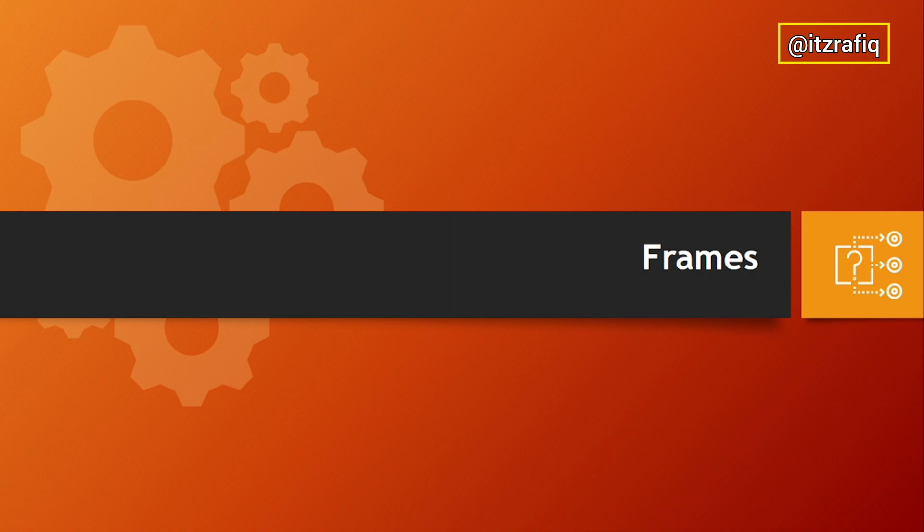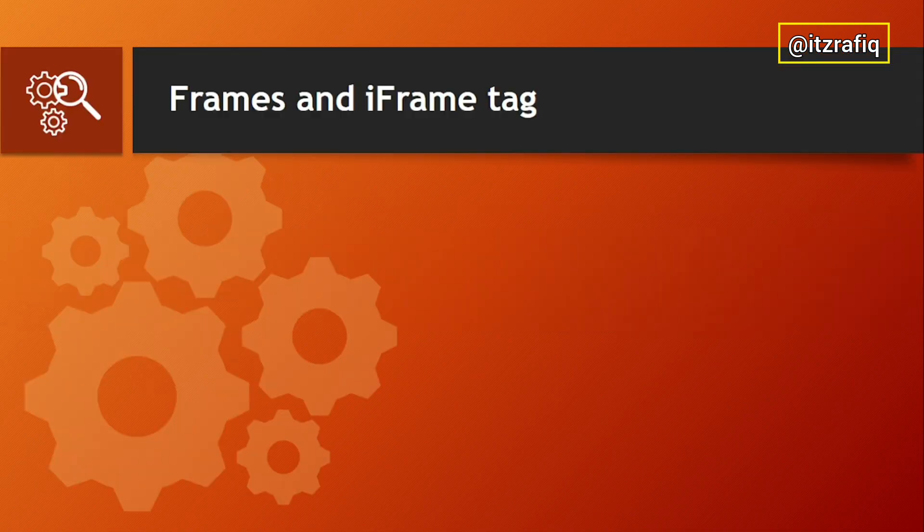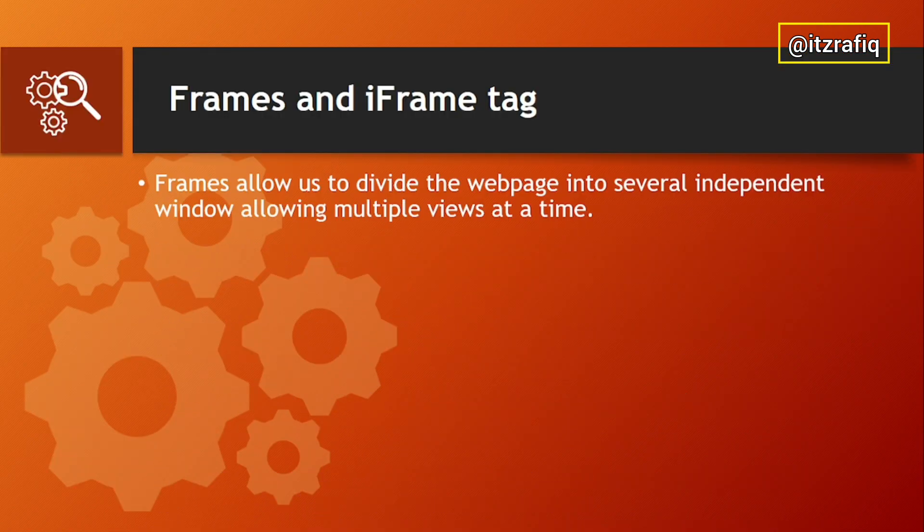For the video tag, we use it to add video to a webpage. Some popular formats are MP4, AVI, and FLV. The attributes are the same as audio — src, controls, autoplay, and loop — plus two extra: height and width. Using height we specify the height of the video, and using width we specify the width of the video.